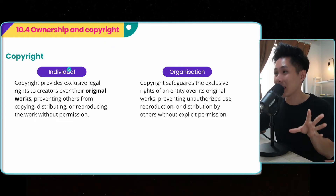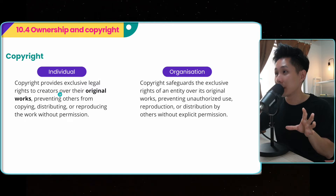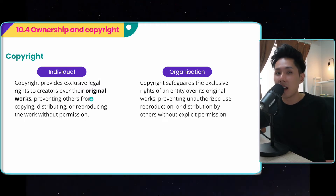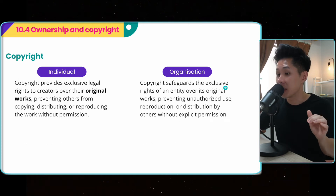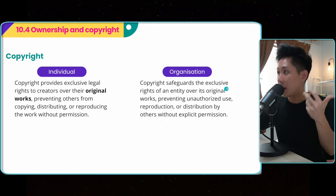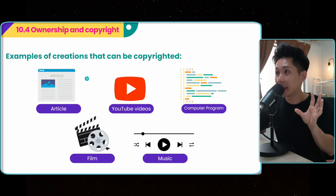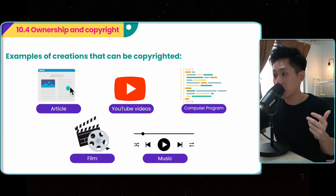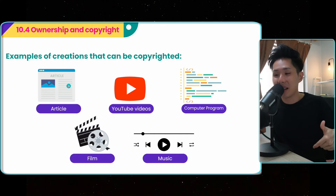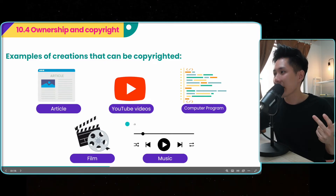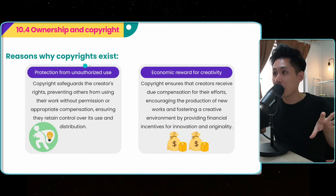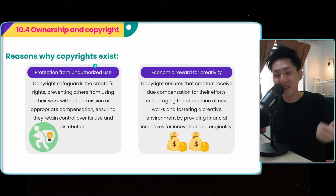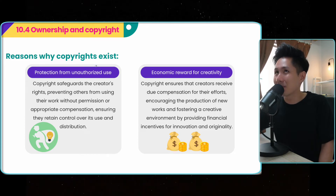The next sub-topic is ownership and copyright. Copyright provides exclusive legal rights to a creator over their original work, meaning if they create something, they should have the right to decide when to share it and when not to. Same goes for organizations — other people should not distribute it without permission. Some examples of creations that can be copyrighted: an article — you cannot just copy the entire article and write your name at the bottom, that would be plagiarism. Films, YouTube videos like the one I'm making now, computer programs, and music. So this is important especially if you have been downloading pirated content.